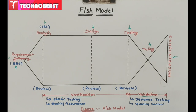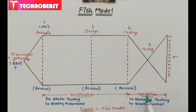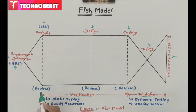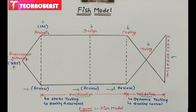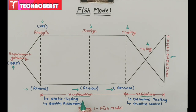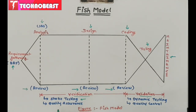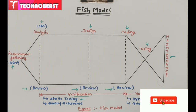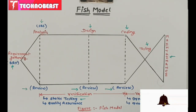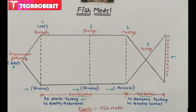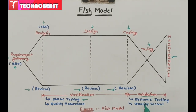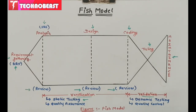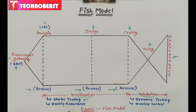From the first phase up to coding, that part we call the validation phase. In every phase there is a review process, and that review process we also call verification. Another name for the verification process is static testing. We also check quality assurance in verification. Moving towards the validation part, it is also called dynamic testing. In validation we check quality control.